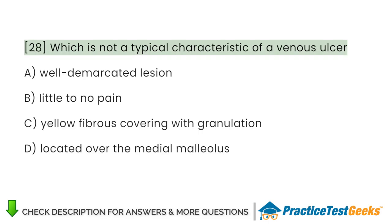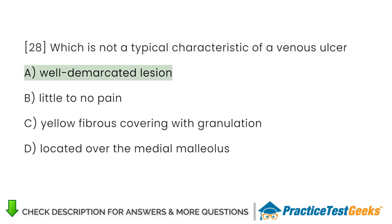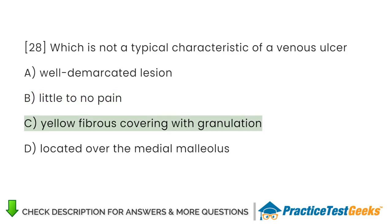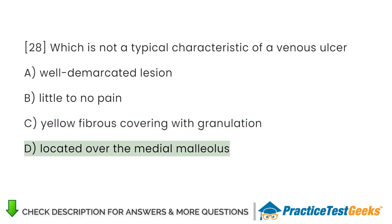Which is not a typical characteristic of a venous ulcer? A. Well-demarcated lesion. B. Little to no pain. C. Yellow fibrous covering with granulation. D. Located over the medial malleolus.